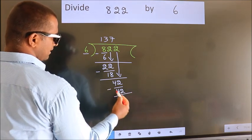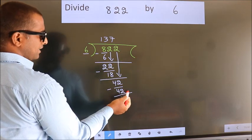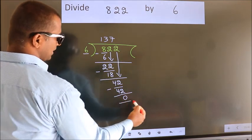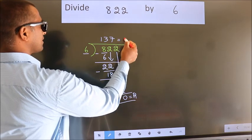Now, we subtract. We get 0. No more numbers to bring it down. So, we stop here. This is our remainder. This is our quotient.